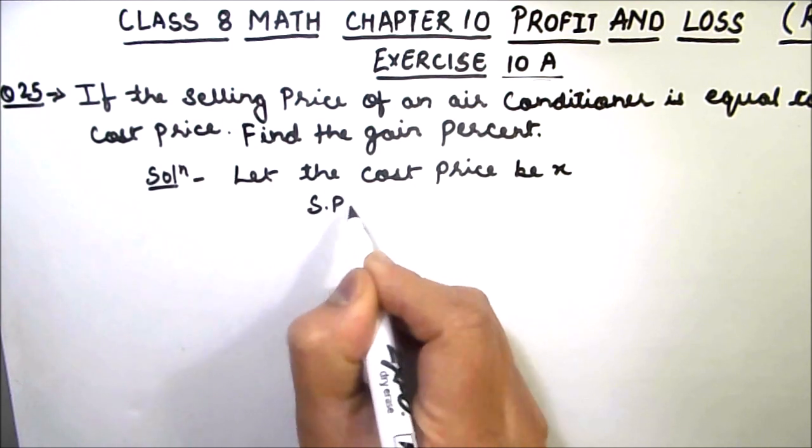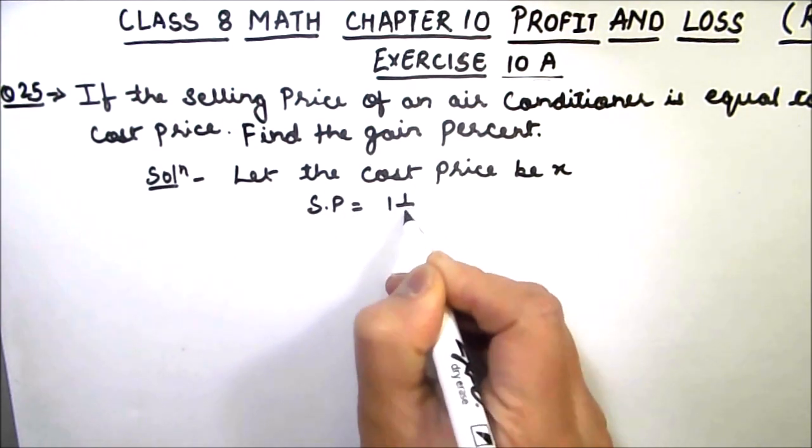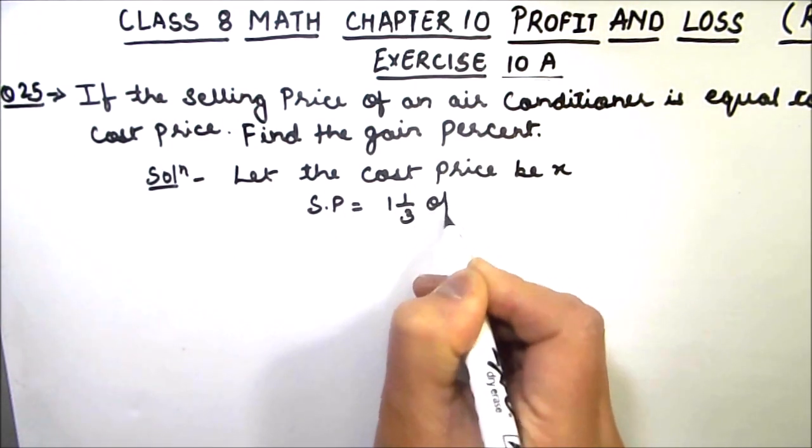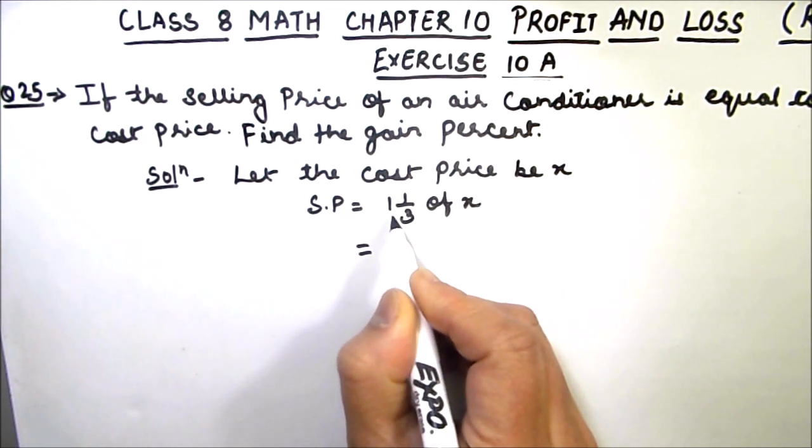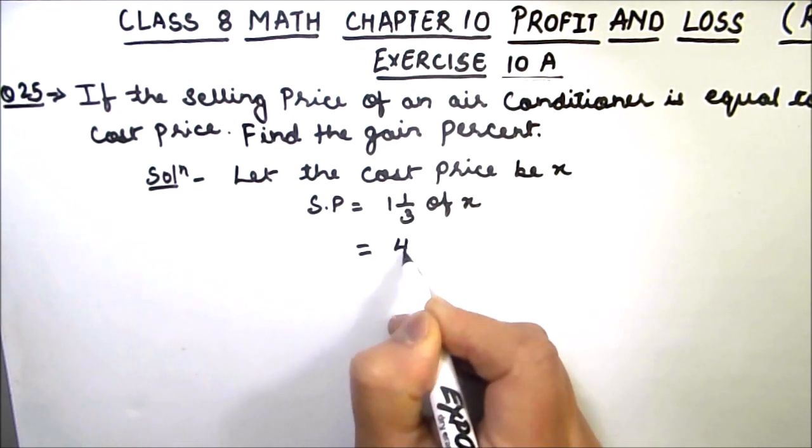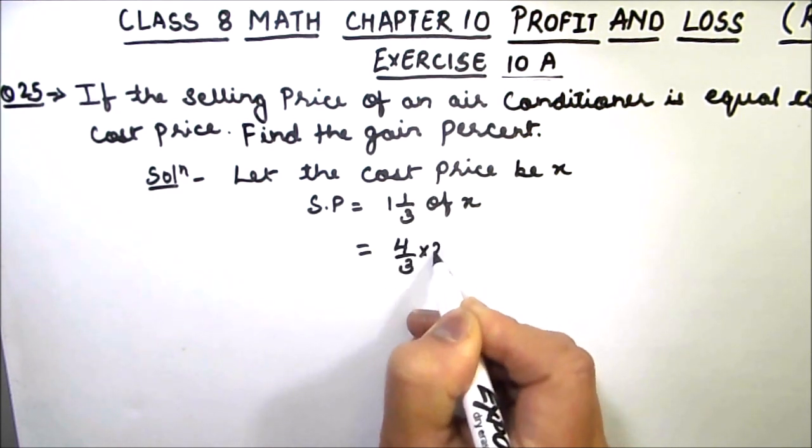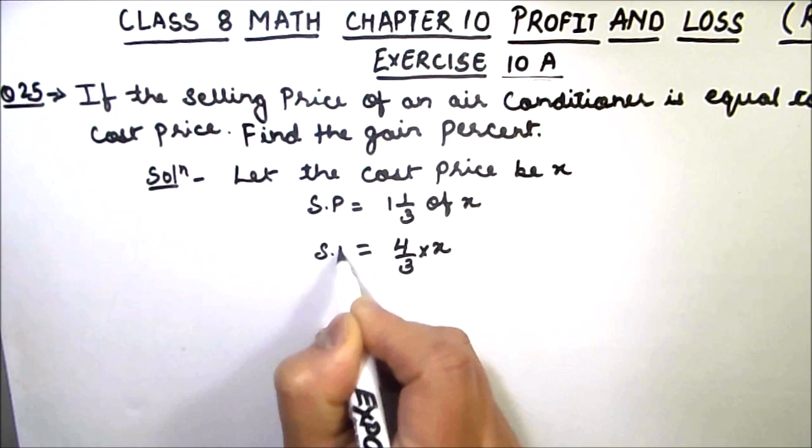Then selling price will be 1 1/3 of x, which is equal to (3 times 1 is 3, plus 1) 4/3 of x. This is the selling price.